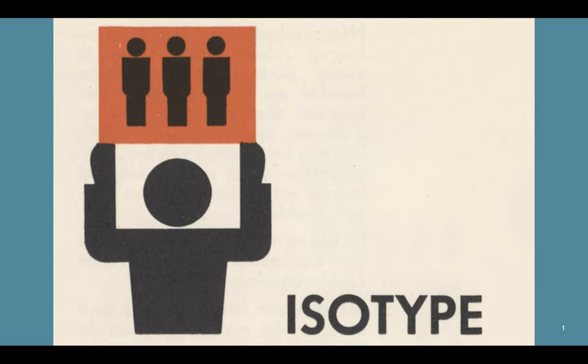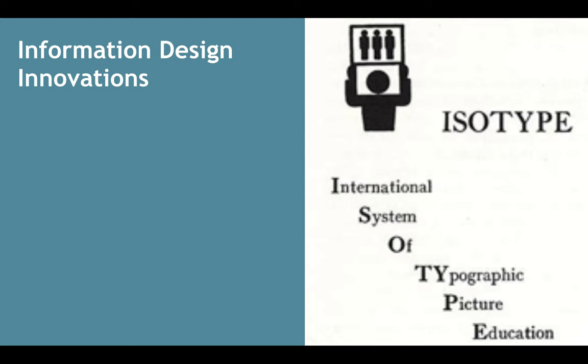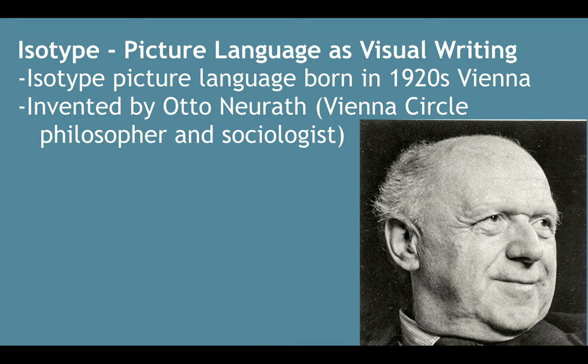Hey, welcome back, my name is Dino and in this mini lecture we're going to be talking about isotypes. It's a form of information design innovation, as you see on the sign here with this gentleman holding up this little picture. It's the International System of Typographic Picture Education. Isotypes have been considered as a picture language that became a type of visual writing.